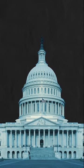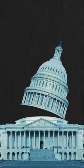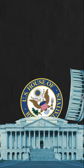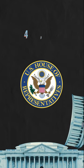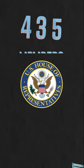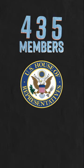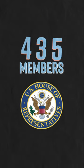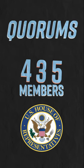Legislatures such as the United States Congress consist of several members so they can vote on laws. Take the House of Representatives — not all 435 members are going to be available to vote in the chamber all the time, so legislatures put in place quorums.